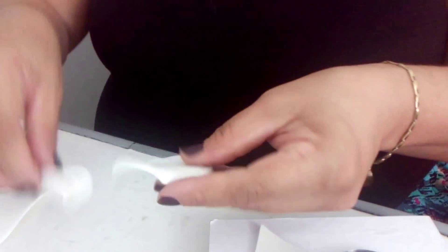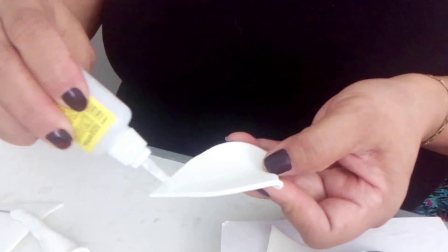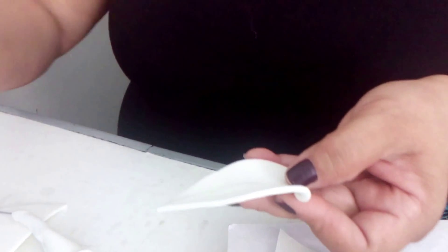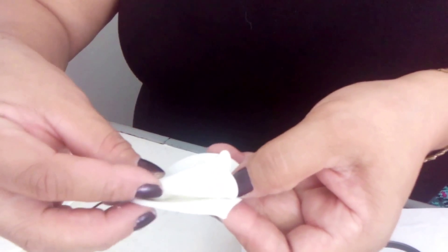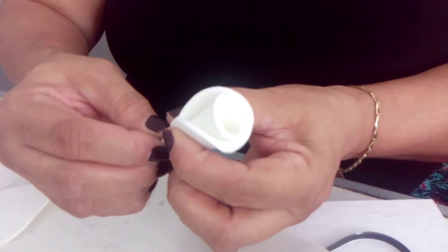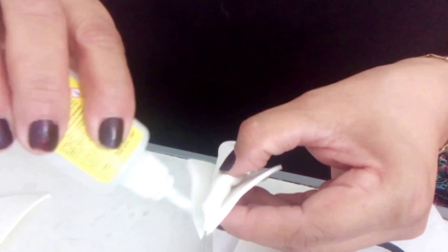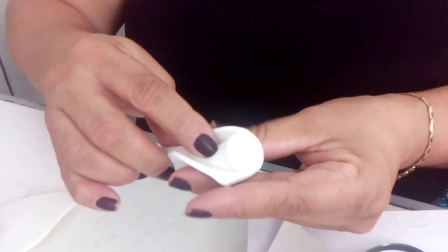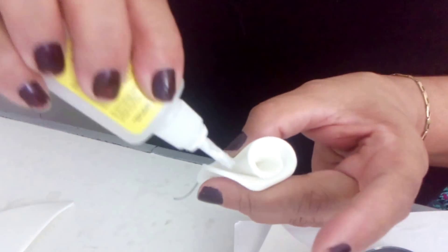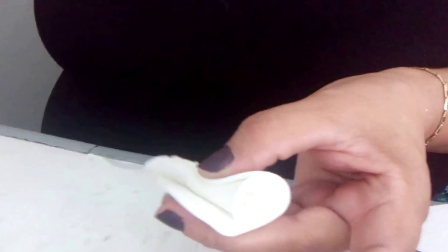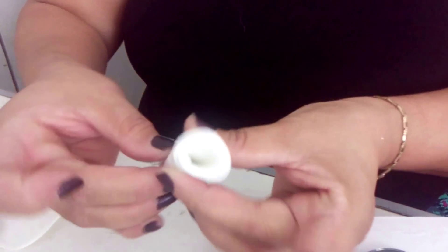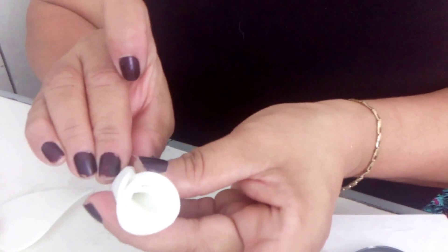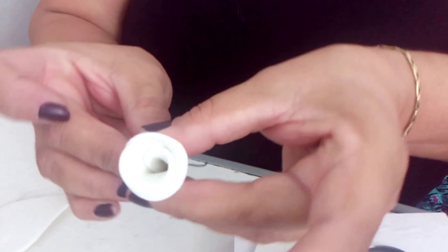I'm going to put the glue in the middle. Now here on the sides. Very little glue. No need for a lot of glue, otherwise you'll glue your fingers too. Here too. Here is the second button of the medium rose.